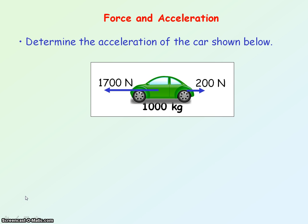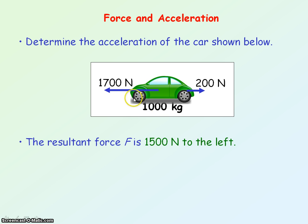To determine the acceleration of the car shown in the diagram, we'd first need to know the resultant force acting on the car. We've got 1700 newtons acting to the left and 200 newtons acting to the right, so the resultant force will be 1500 newtons to the left. That tells us, from F equals mA, that the acceleration will be in the same direction as the resultant force, so the acceleration will be to the left.